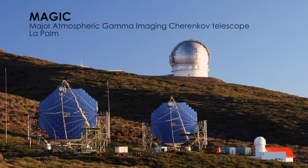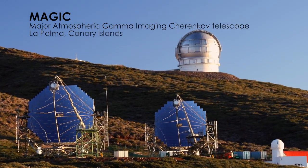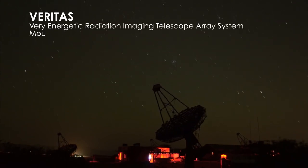Ground-based gamma-ray observatories sport much larger light collectors than Fermi. But like traditional telescopes, they only work at night.